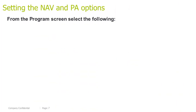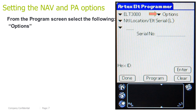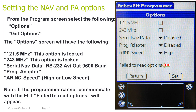Setting the NAV and PA Options. From the program screen, select the following: Options, then Get Options. The options screens will have the following: 121.5 and 243 — this option is locked; Serial NAV data; RS232 AVI out 9600 baud; Programming adapter; Erring speed high or low speed. Note: if the programmer cannot communicate with the ELT, 'failed to read options' will appear.